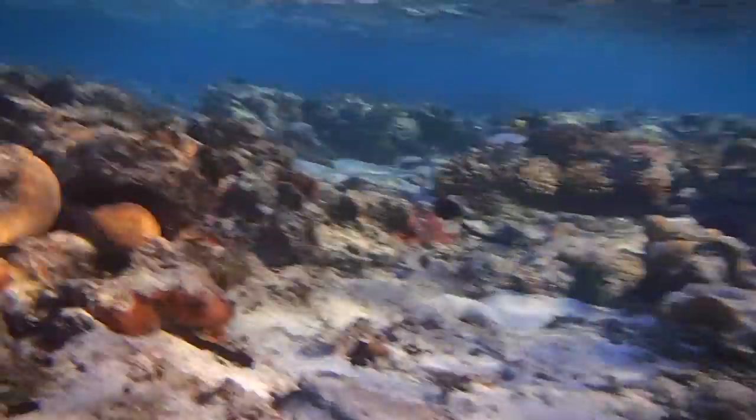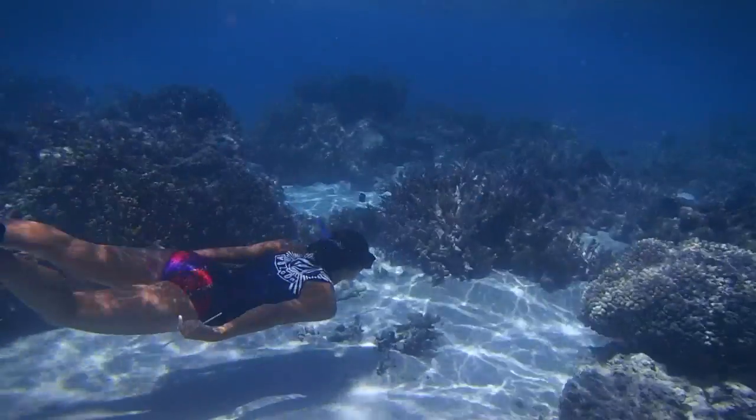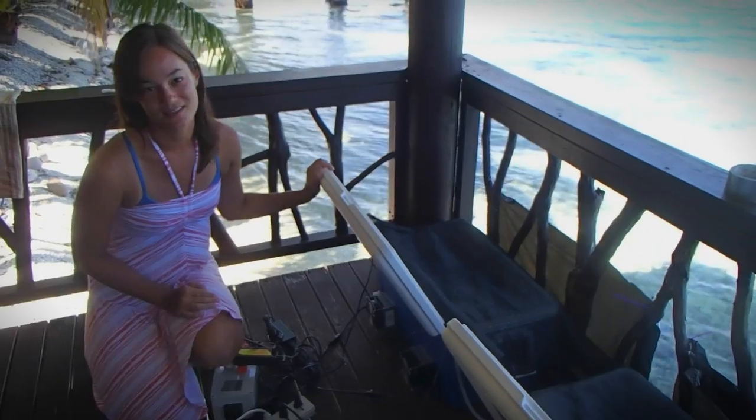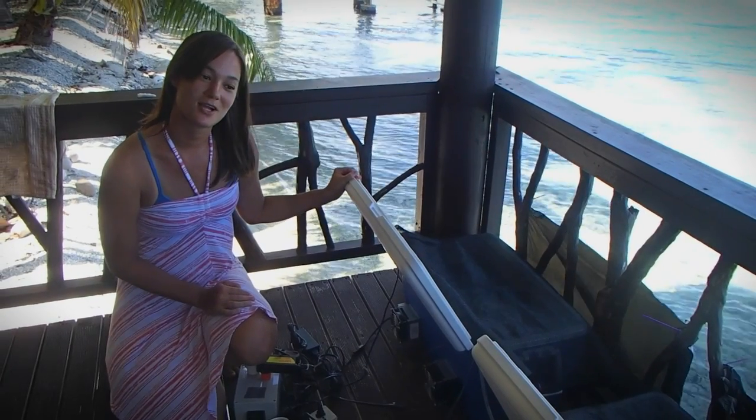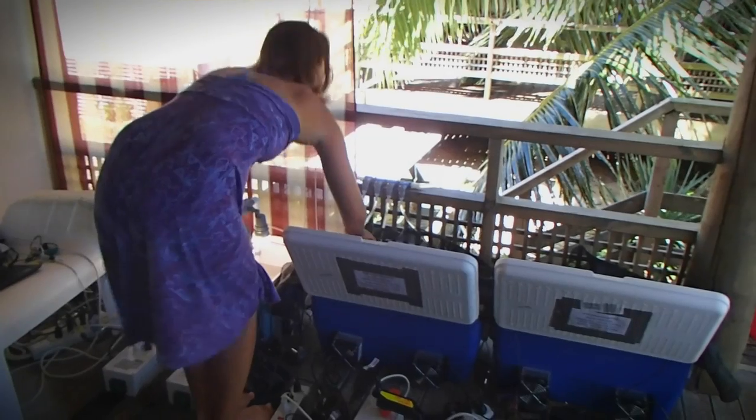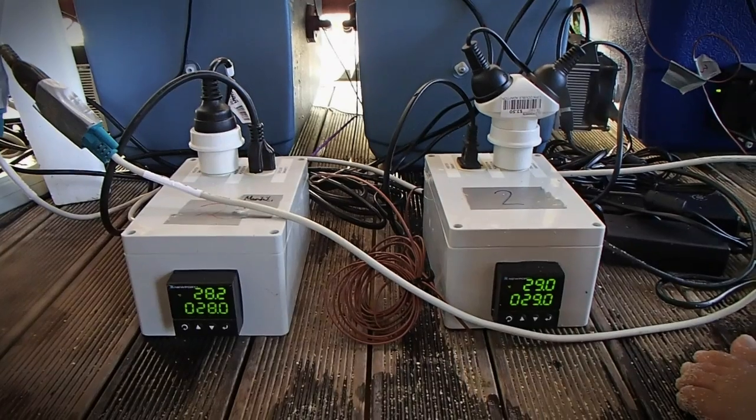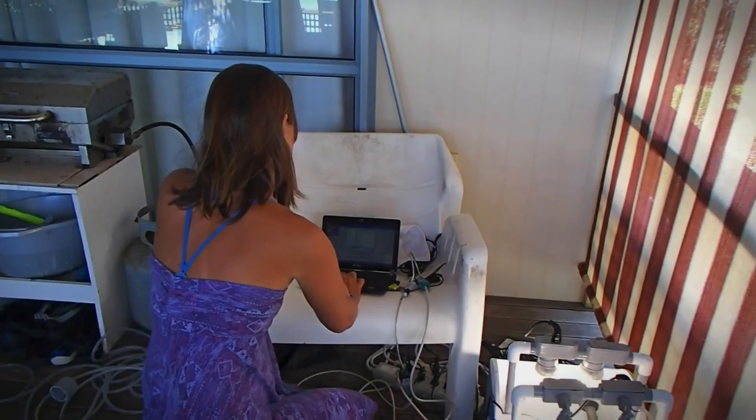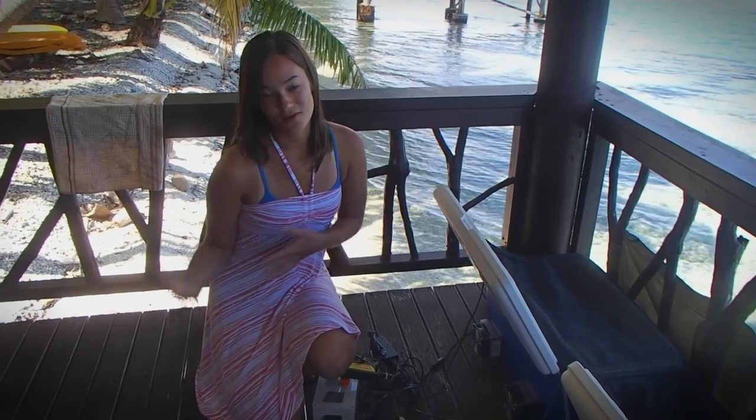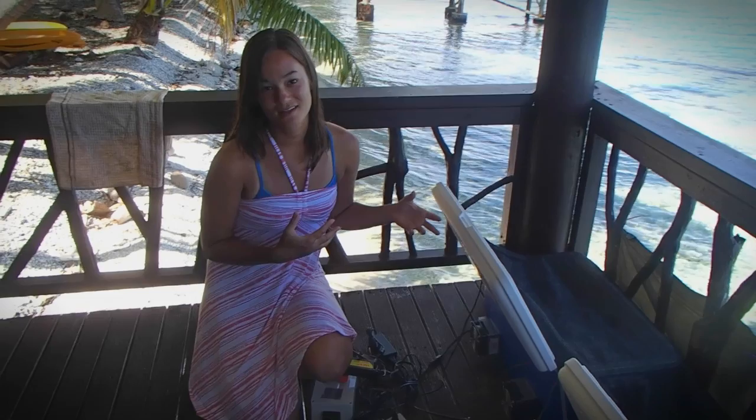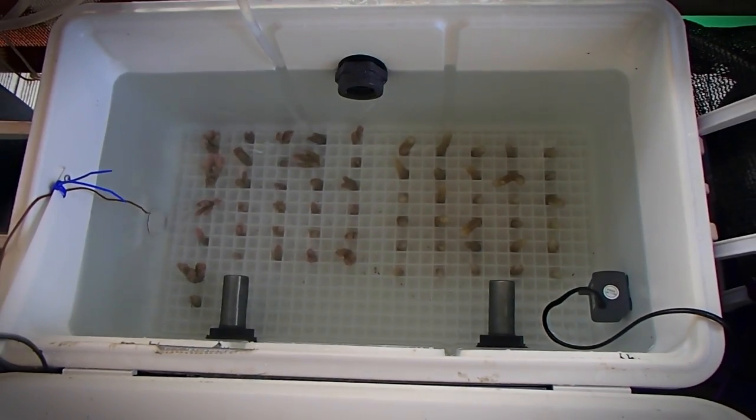These are our acclimation tanks that we've rigged to change the temperature. So we can keep corals for a week or two in these tanks and try to change their thermal tolerance. So this tank here is actually pretty cold for corals. That tank is hot for corals. And what we'll do is after the corals have stayed in these two tanks for maybe a week, then we'll test their thermal tolerance and see if it's changed from what it is out on the reef.